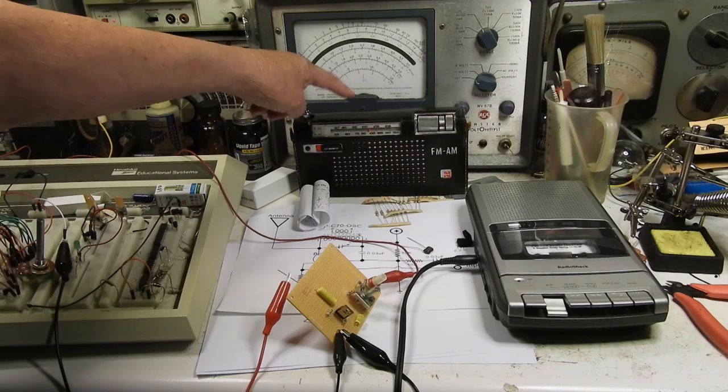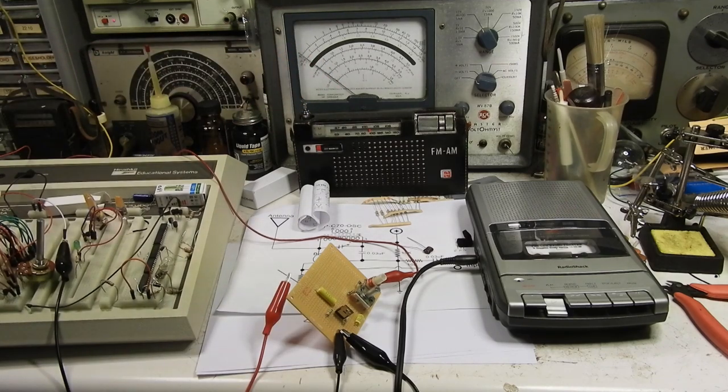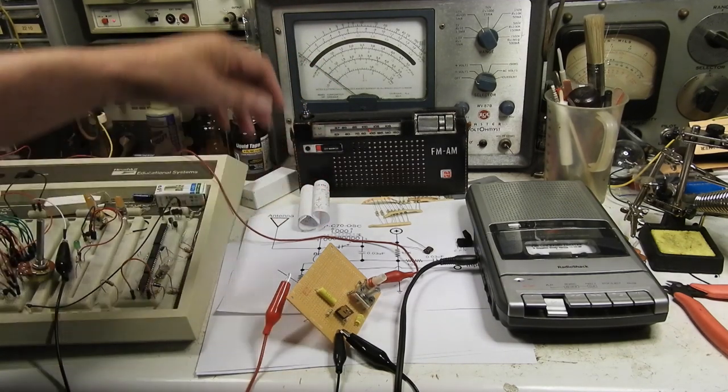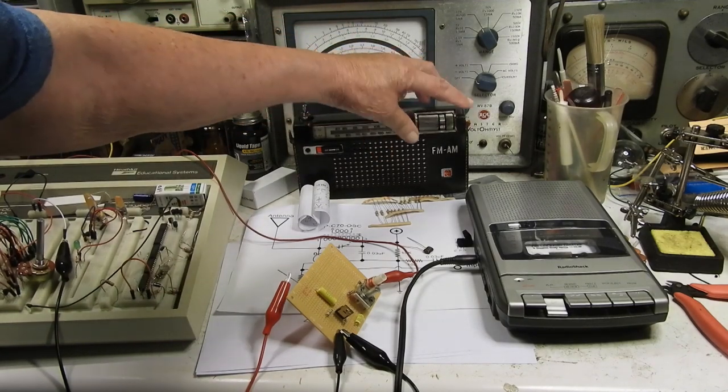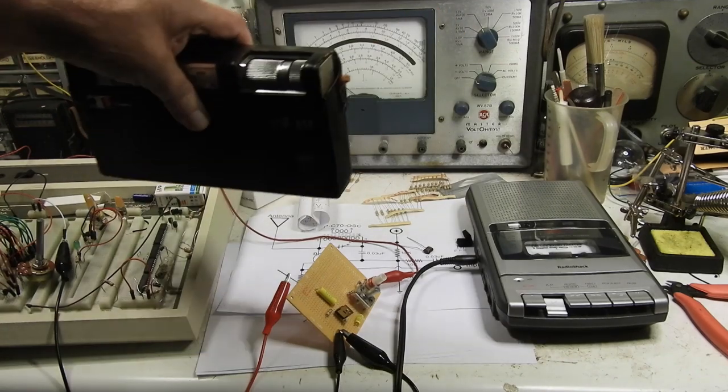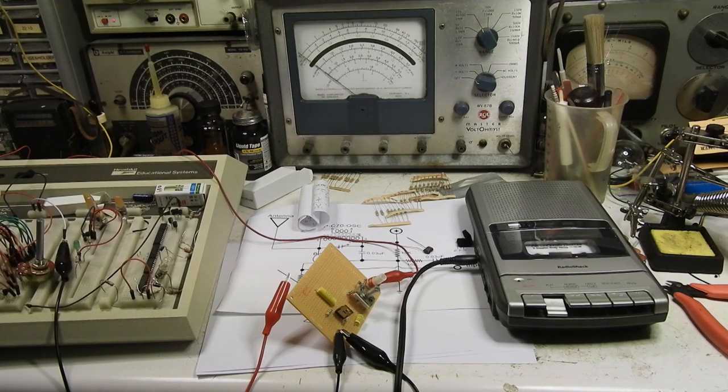I suspect that the AGC is being overdriven because it's pretty close to the transmitter. I'm going to pick the radio up. And I'm not going to change the volume. I'm just going to move the radio away. Yep. Move it away from the transmitter a little bit, it gets louder. And it sounds really good, too.